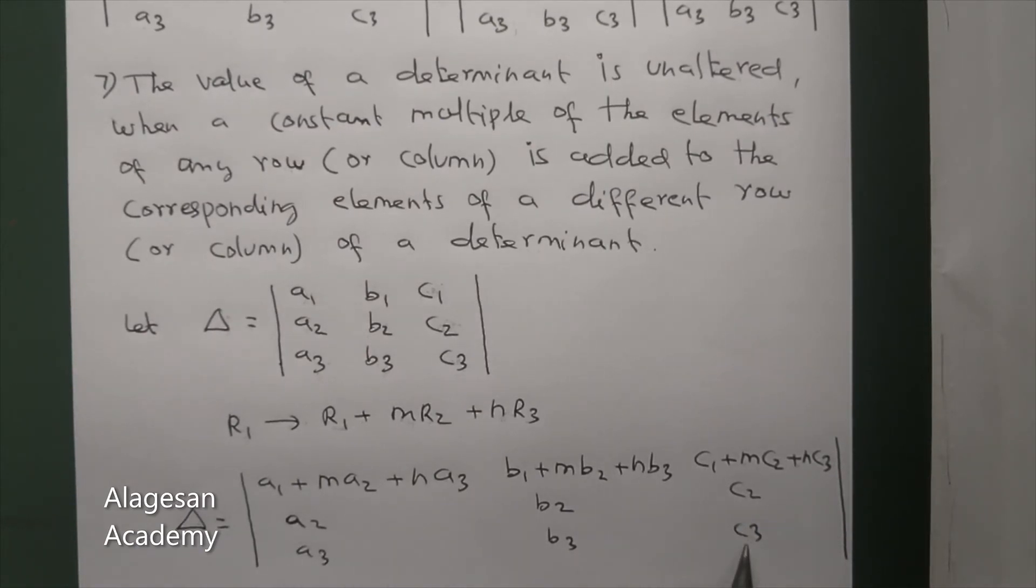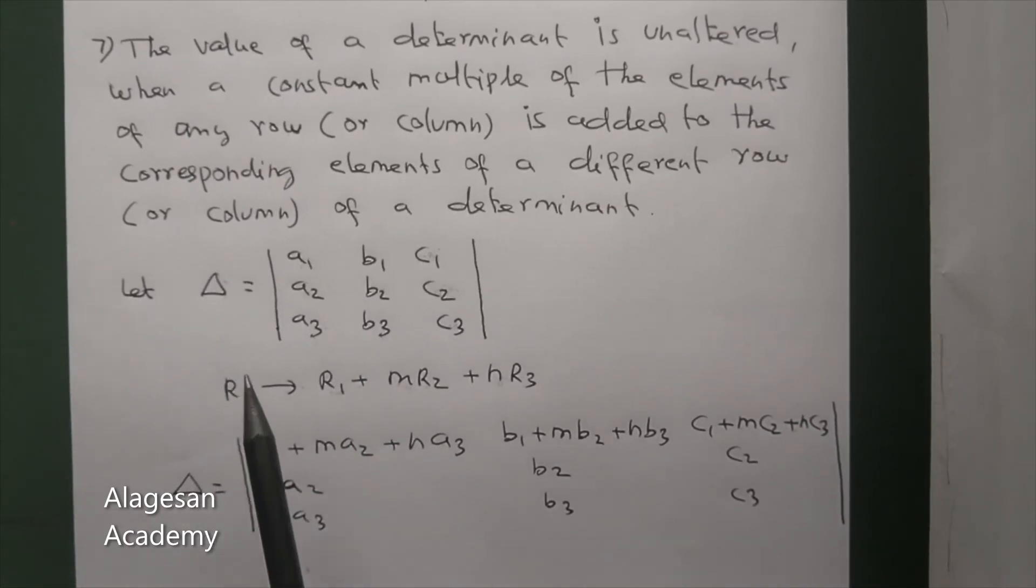Second and third rows remain unchanged. The value is still delta. This determinant's value is delta. What we're doing here is R1 is replaced by R1 plus mR2 plus nR3.